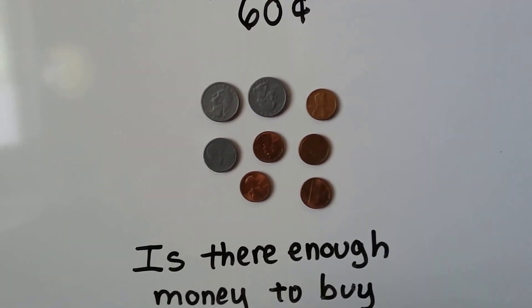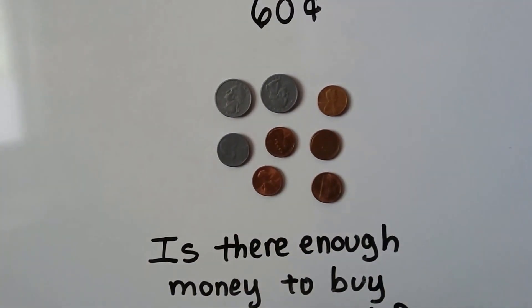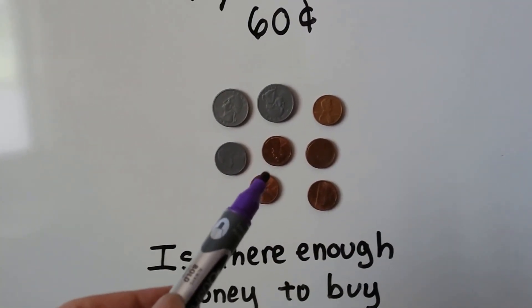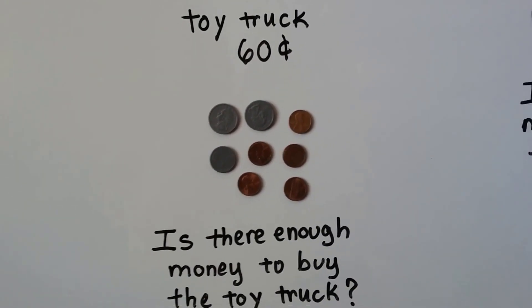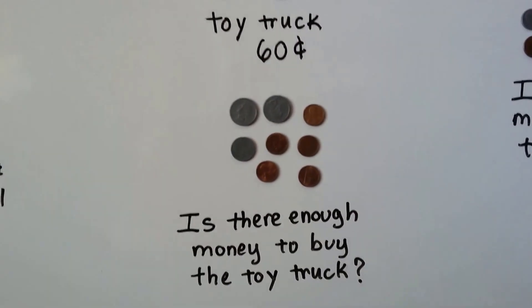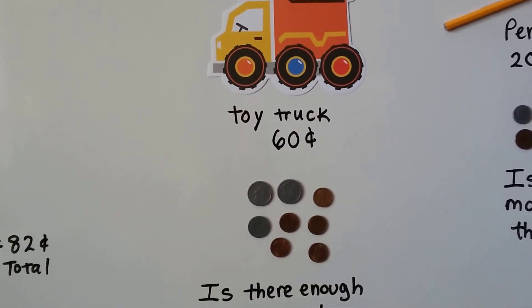Now we add the nickel. 50, 51, 52, 53, 54, 55. And we add the pennies. 56, 57, 58, 59, 60. So is there enough money to buy the toy truck? Yes. There is. We can buy that toy truck if we want to. There's enough money there.